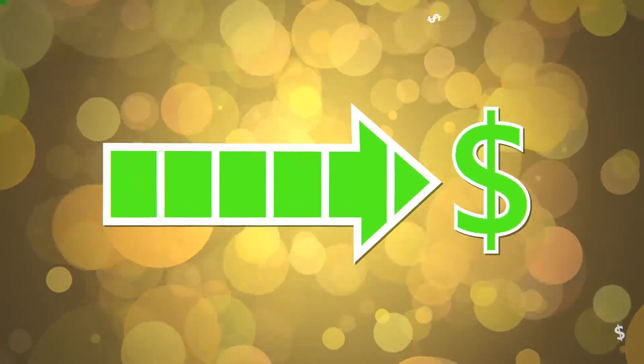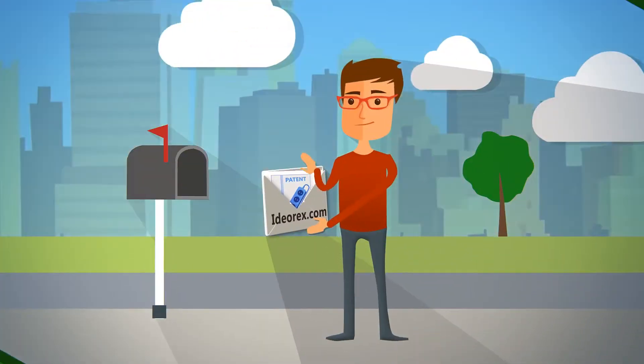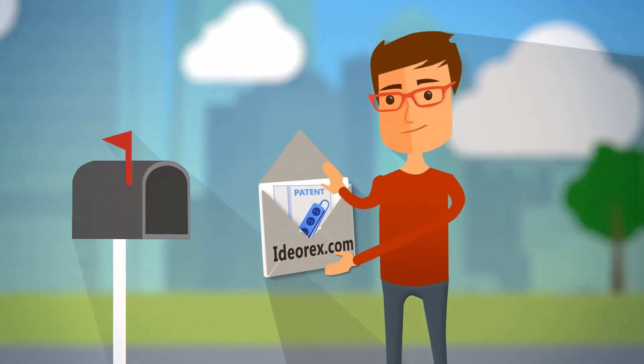Once the arrow is filled, you get your very own provisional patent and production begins. Shortly after, your provisional patent comes in the mail. Take that, Tony Stark.